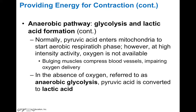Normally pyruvic acid enters mitochondria to start the aerobic respiration phase, which does require oxygen. However, at high intensity activity when oxygen is not available — and when bulging muscles compress blood vessels and impair oxygen delivery — we have to rely on glycolysis as a source of ATP for muscles. In the absence of oxygen, we refer to this as anaerobic glycolysis.